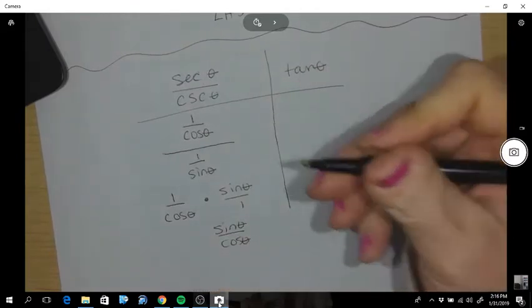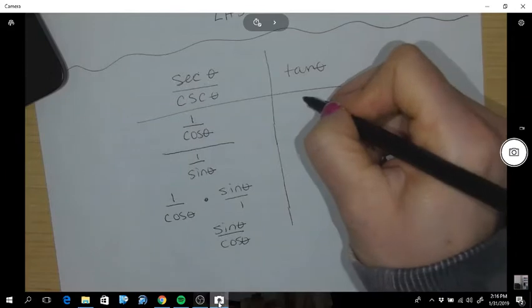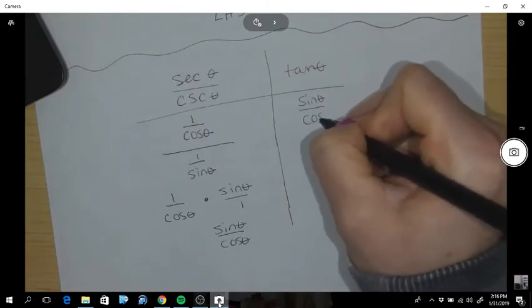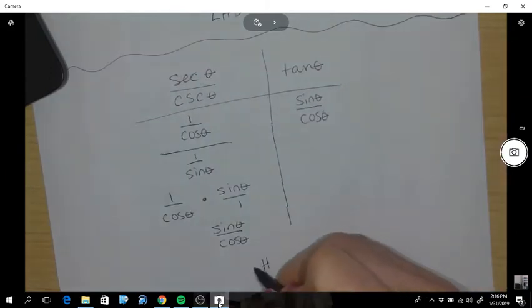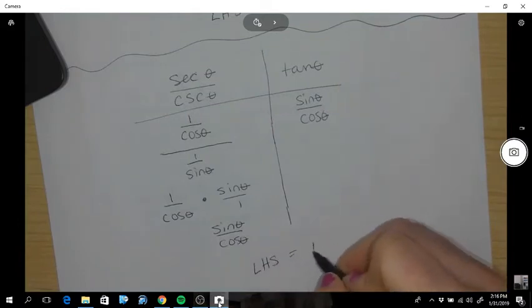And you can work on both sides. Tangent can be replaced with sine angle over cos angle. So now I've shown that the left hand side equals the right hand side.